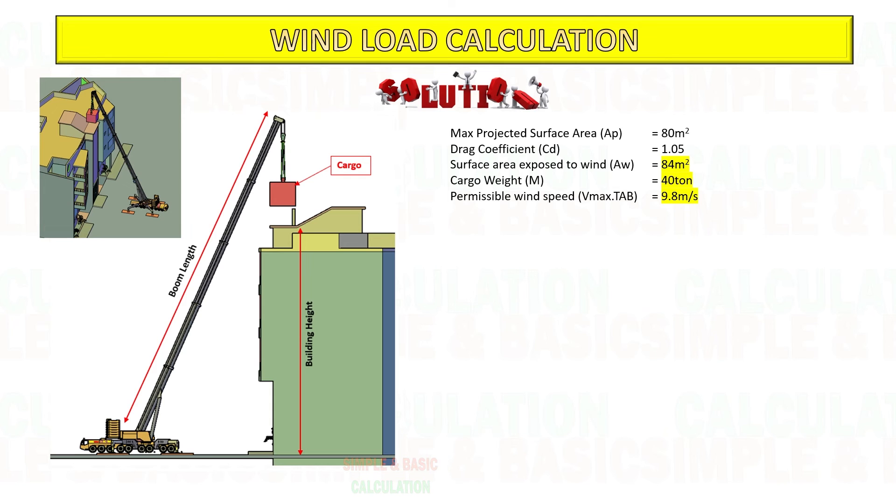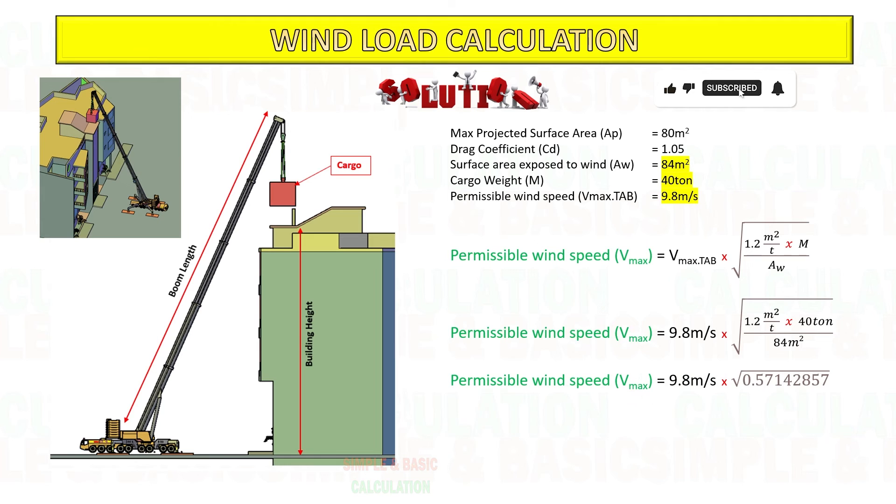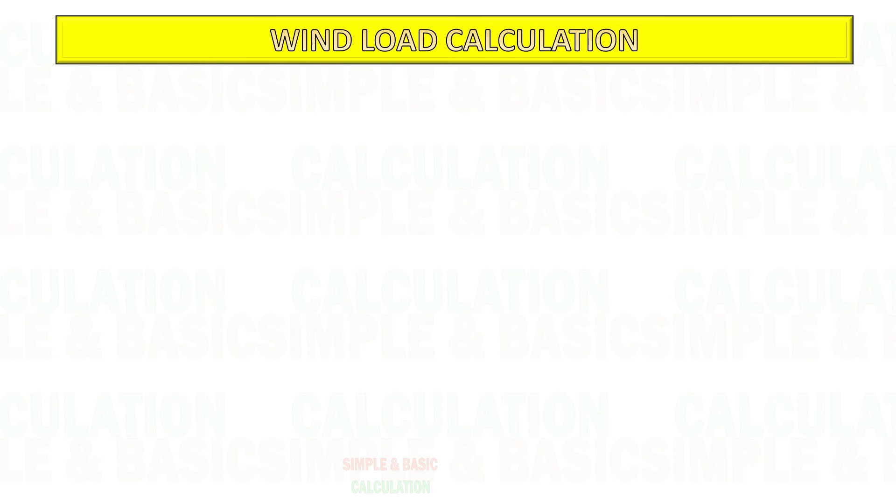For this example, I will use 9.8 meter per second, the allowable wind speed from the crane data. Start to substitute the given data into the formula: permissible wind speed from crane data, cargo weight, surface area exposed to wind. Based on calculation, the permissible wind speed reduces from 9.8 meter per second to 7.4 meter per second. You should not lift the cargo if the wind speed in your site is more than this value.